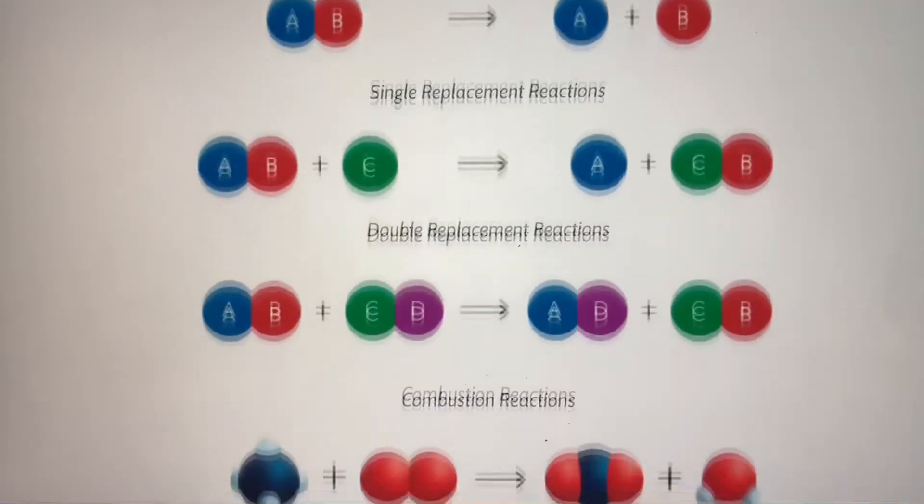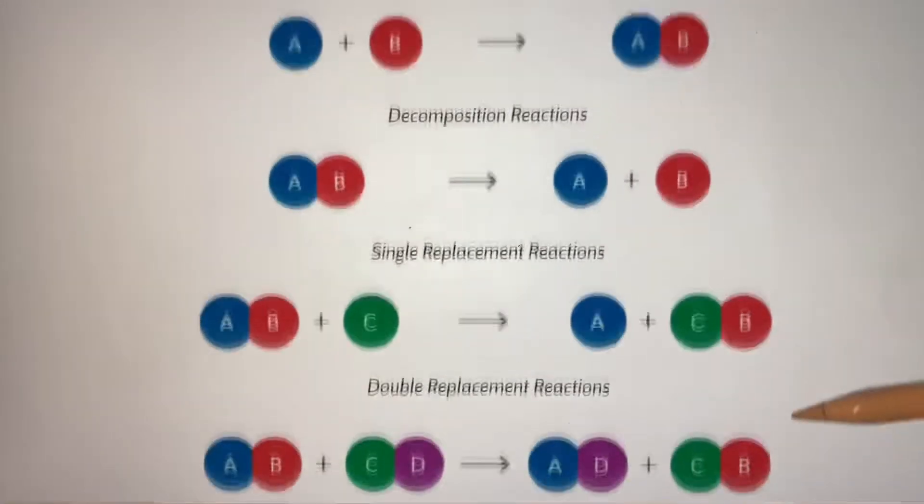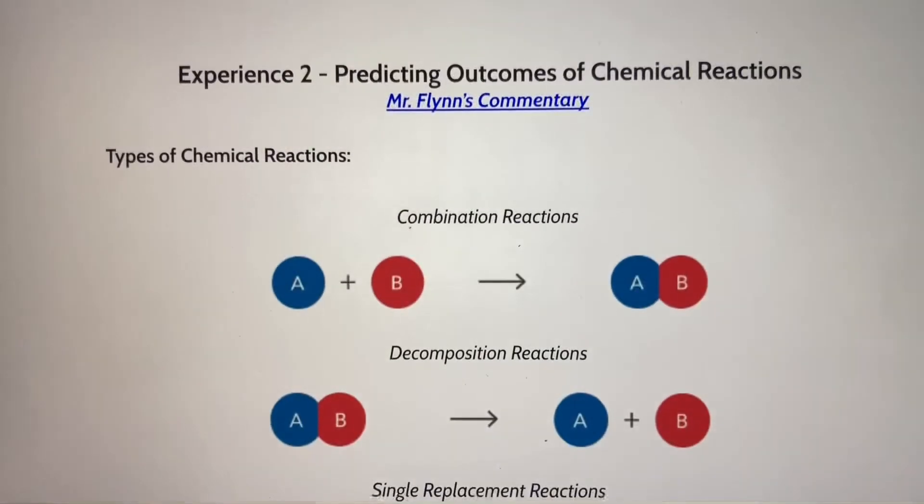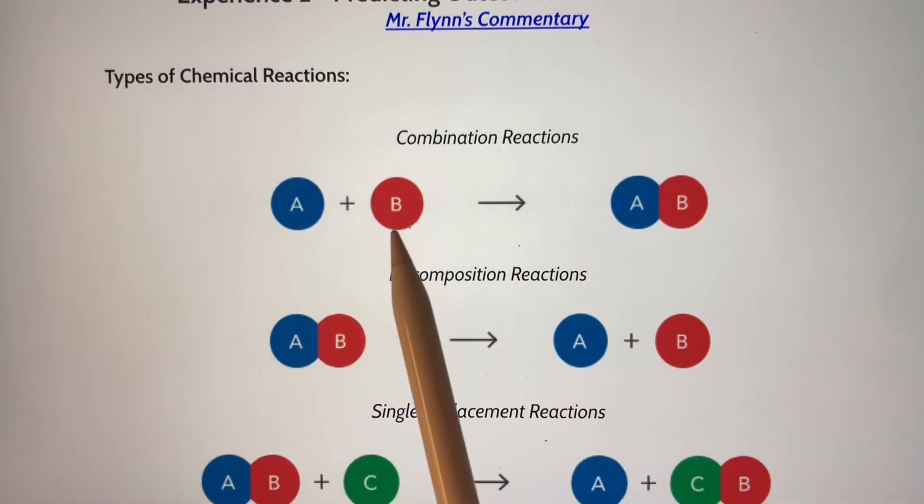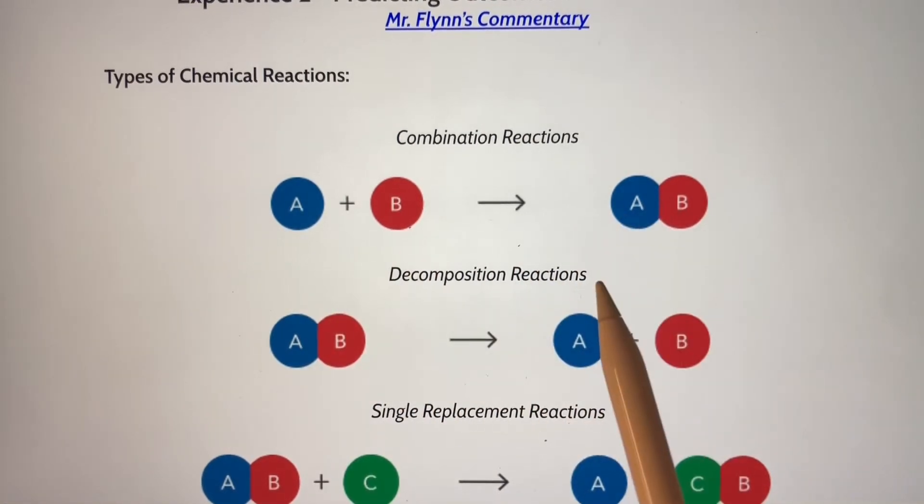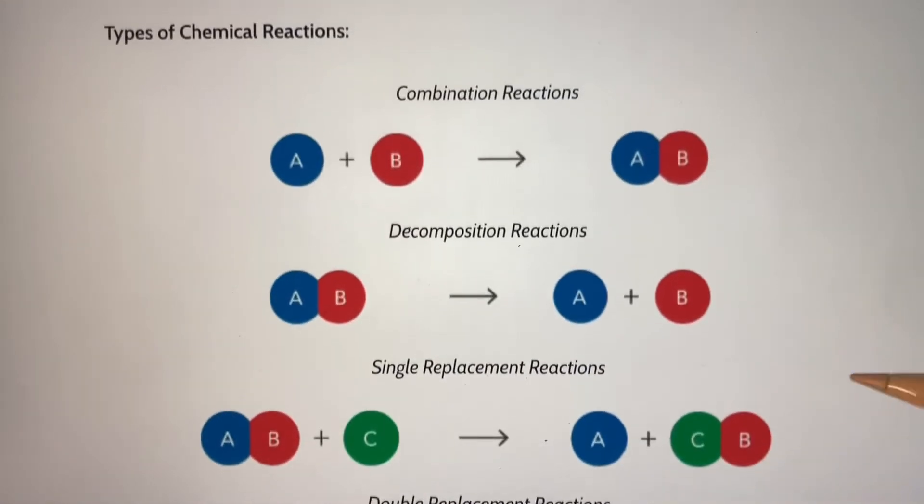If we look here at your notes, there are five major ways of classifying reactions. It's pretty straightforward. A combination reaction has two entities that are being combined to form a new substance. We're going to go through and discuss each of these individually. So this is more of just an overview.